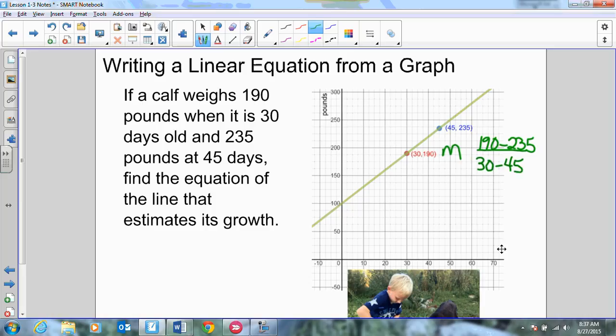Had I gone the opposite way and said I want to know how much he is when he was older, I'd start with the 235 minus the 190, and then the 45 minus the 30. It doesn't matter, as long as whatever point you start with is the one that you go back to for your axis. So what is 190 minus 235? Negative 45, very good. What is 30 minus 45? Negative 15.